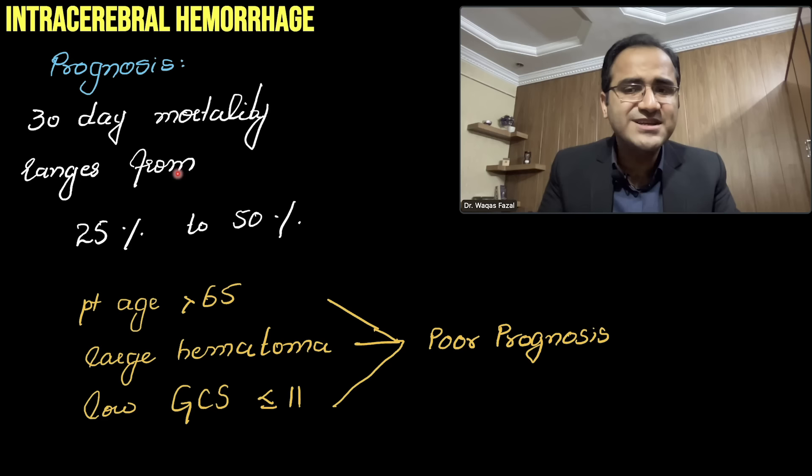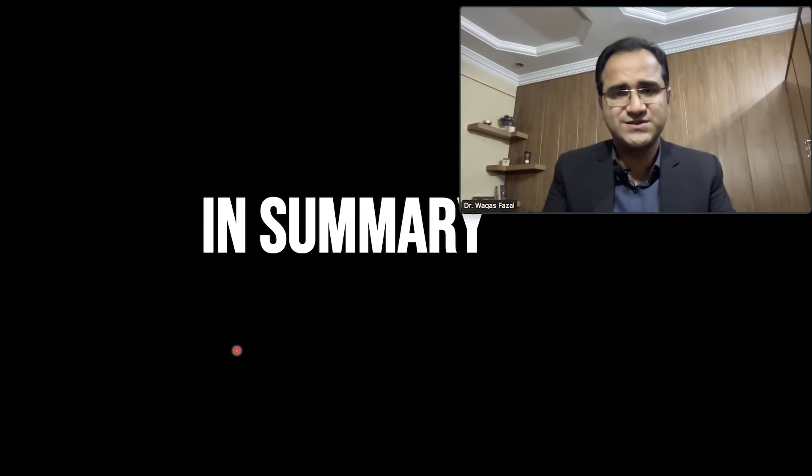Prognosis: 30-day mortality ranges from 25% to 50%. Poor prognosis is associated with age greater than 65, a large hematoma, and a low GCS score.